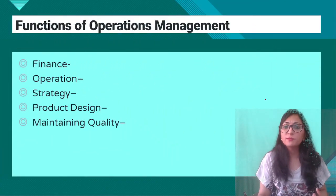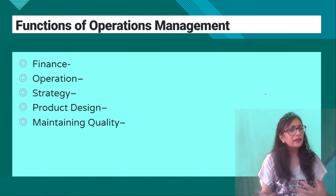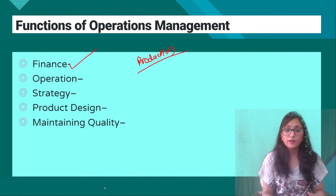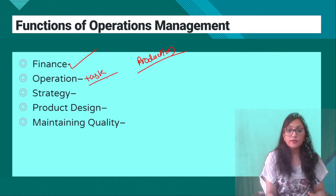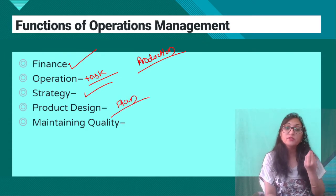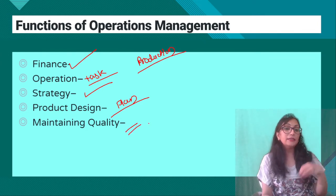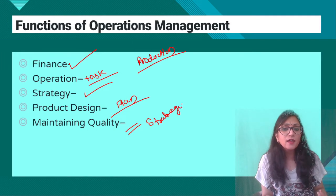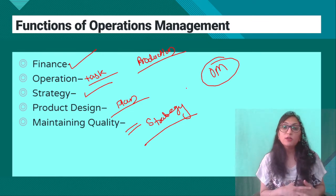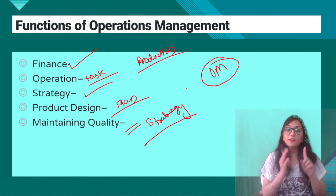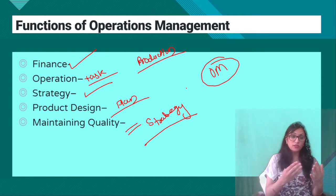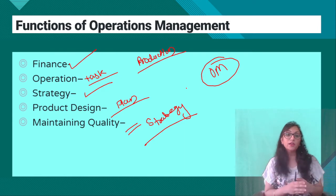Now, what are the functions of operations management? It is used everywhere. It covers how much finance is required for production, how many tasks are required, whether strategies are being followed, what is the design of the product, what plans are in place, and what strategies are used for quality maintenance. With successful operations management, you use finance properly, complete all tasks, prepare proper strategies, design your product to reach the customer, and maintain quality.